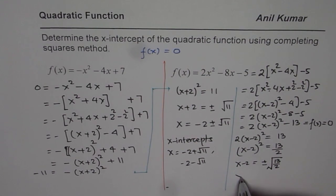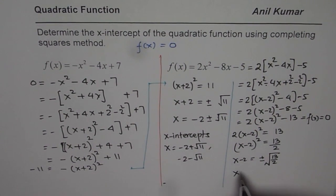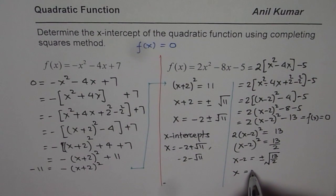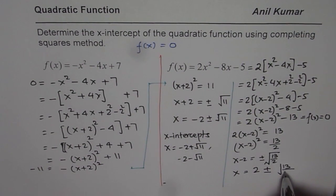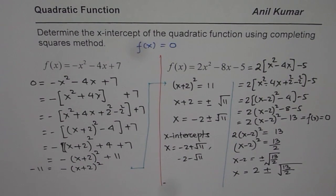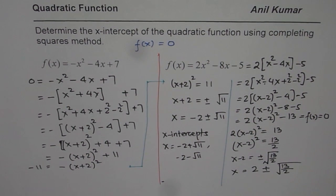And then, x is equals to, let me push this page a bit. So, we get, taking 2 to the right side, 2 ± √(13/2). So, that becomes our answer for the x-intercepts.